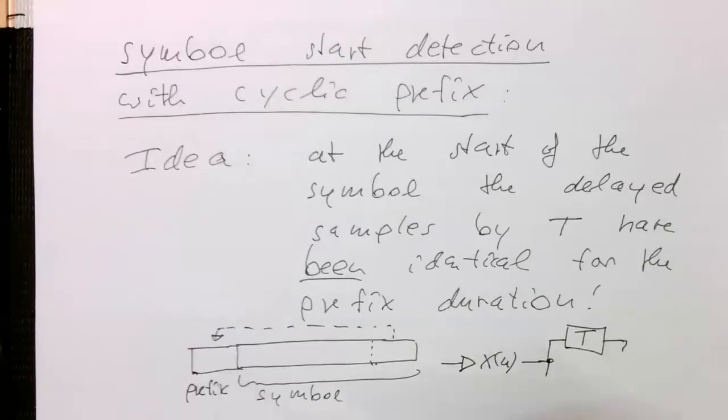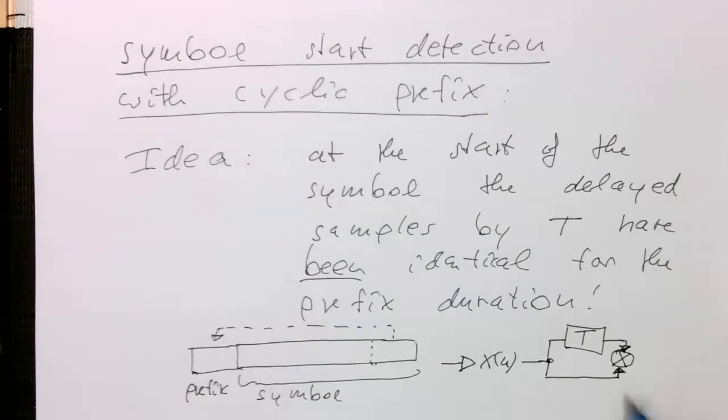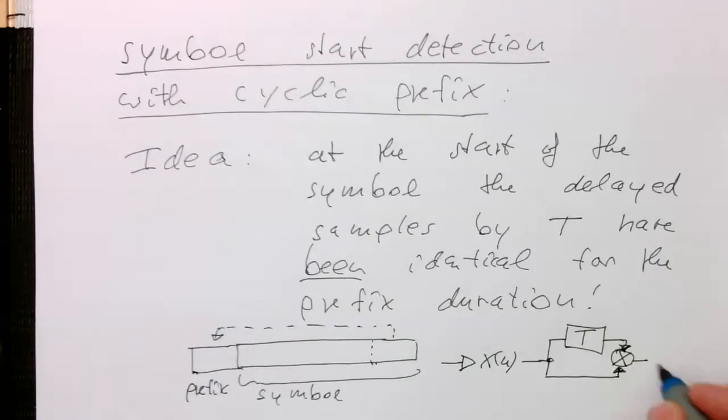Now comes a trick which is always done in communication. We are multiplying this here. Obviously, in this case, we no longer have nice sine or cosine waves. But we know that if we accumulate this here for the duration of the prefix, that this will be then highest here, and exactly at this point here.